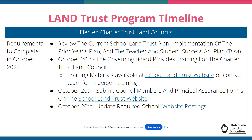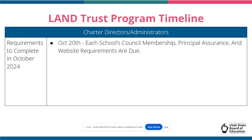Finally, elected trust land councils need to update their school website with the necessary program requirements by October 20th. If you saved a copy of this presentation, you may click on the link here to access the list of required website postings. Prior directors and administrators should work with their councils to make sure that council membership forms, principal assurance, and website requirements are all submitted to the school land trust site by October 20th.